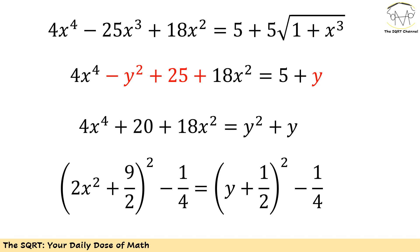The left hand side is more complicated, so let's focus on the right hand side first. On the right hand side I have y² + y, and we can replace this by completing the square: (y + 1/2)² minus 1/4, to get exactly what we have.